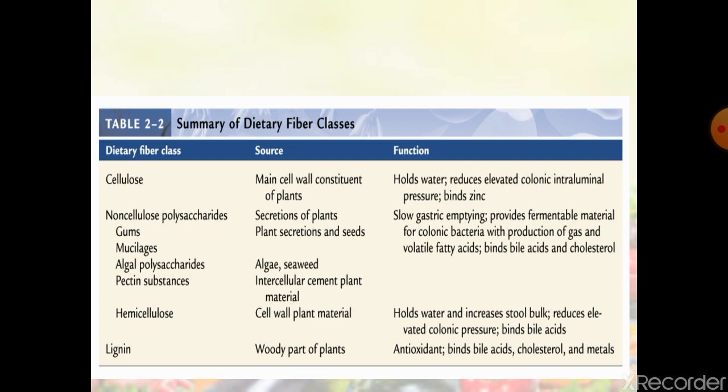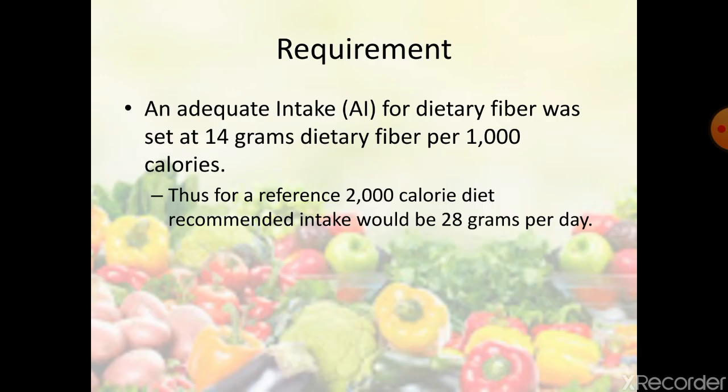Examples of dietary fibers include cellulose, non-cellulose polysaccharides, gums, mucilage, algal polysaccharides, pectin, hemicellulose, and lignin — their sources and functions are important to review. The adequate intake of dietary fiber is 14 grams per 1000 calories; for a reference 2000-calorie diet, it is recommended to have 28 grams per day.